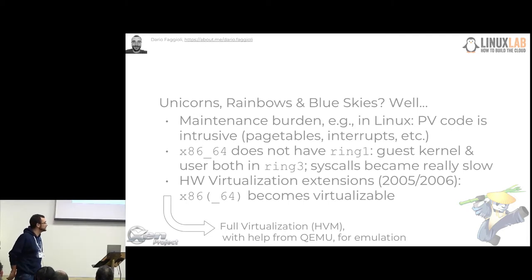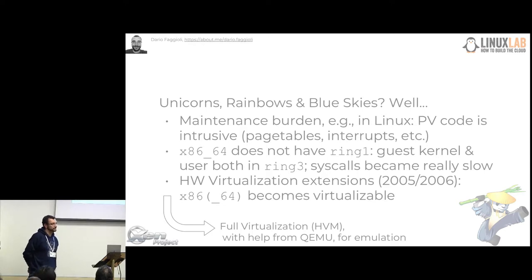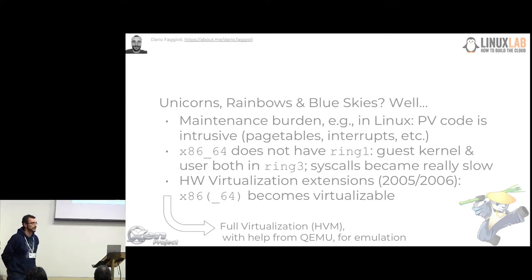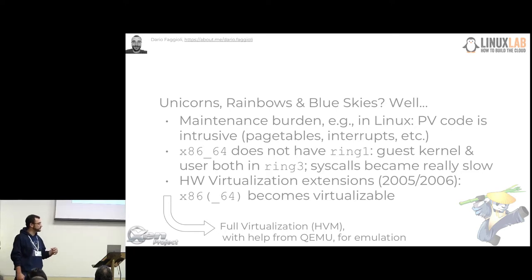Then a few things happened. The idea of modifying the source code of the operating system to make it aware of para-virtualization is a great idea, but it comes with a few issues. The code you have to modify is pretty core and critical code of the operating system itself — page tables, interrupt management, boot paths — and it turned out to be rather intrusive. In the case of Linux, the existence of this code and the need for these modifications has caused historically more than one problem.